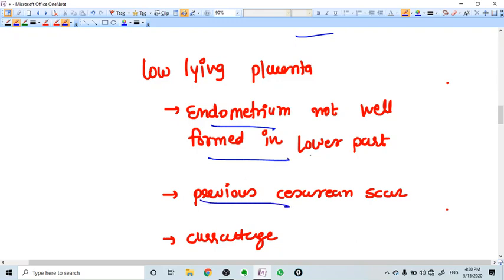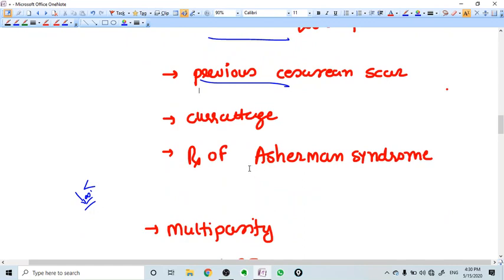If we have previous caesarean scar, then at that particular scar we don't have the endometrium very good. And if we have done deep curettage, then also we lose the endometrium.